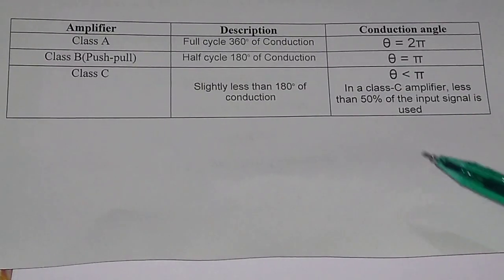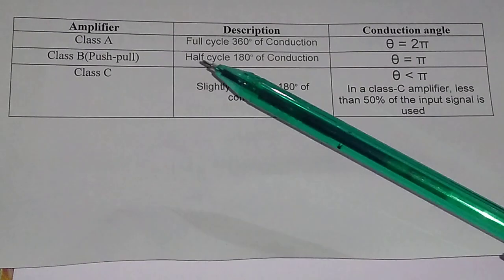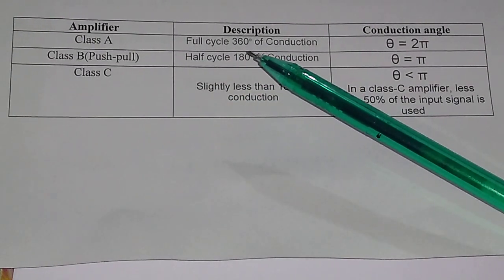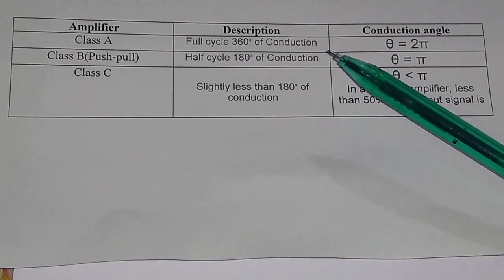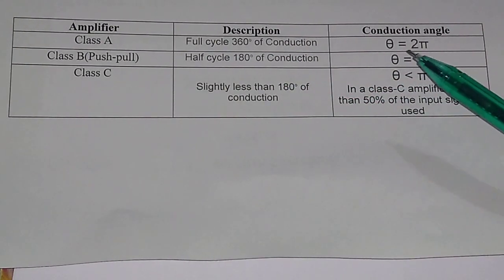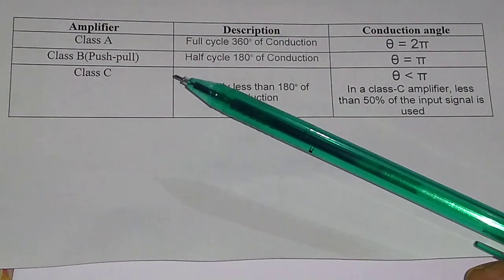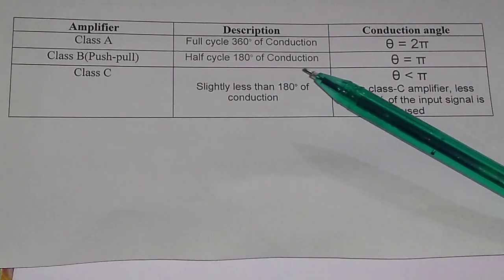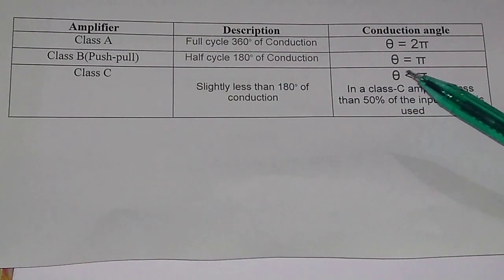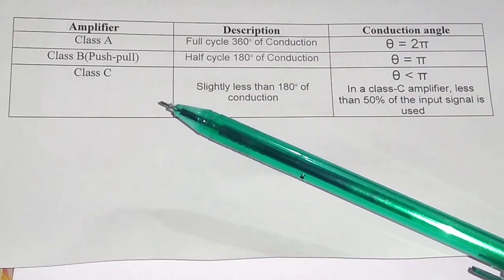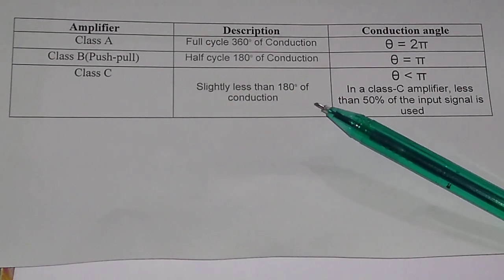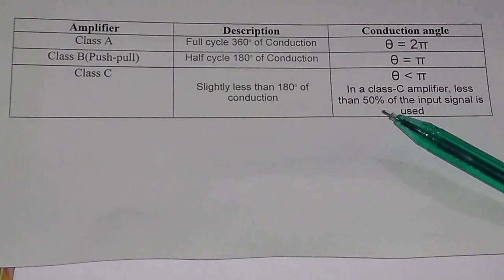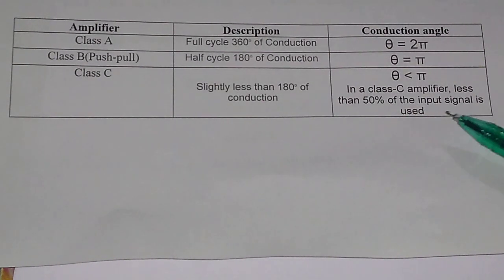Remember the conduction angles: in class A, conduction is 360 degrees (theta = 2π); for class B (push-pull), conduction is 180 degrees (theta = π); and for class C, conduction is slightly less than 180 degrees, meaning less than 50 percent of the input signal is used.